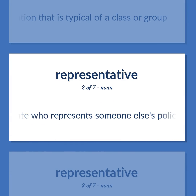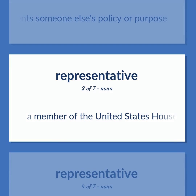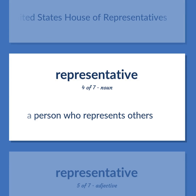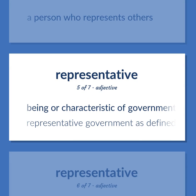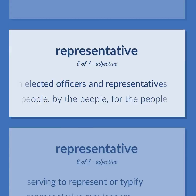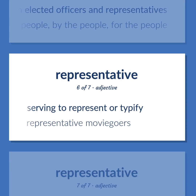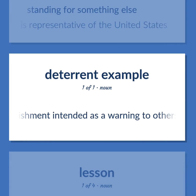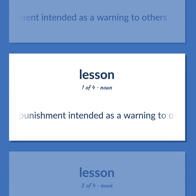Representative: an advocate who represents someone else's policy or purpose. An item of information that is typical of a class or group. A person who represents others. Being or characteristic of government by representation in which citizens exercise power through elected officers and representatives — 'Representative government is defined by Abraham Lincoln as government of the people, by the people, for the people.' Serving to represent or typify — 'Representative moviegoers.' Standing for something else — 'The bald eagle is representative of the United States.' Punishment intended as a warning to others.